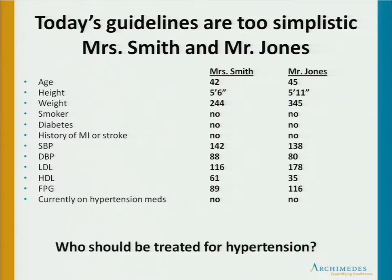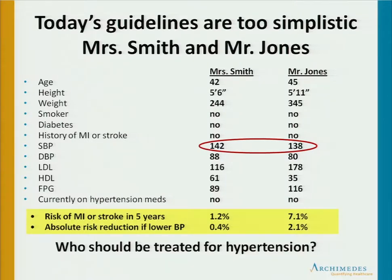The question we're going to ask is who should be treated for hypertension. The hypertension guideline says treat if your blood pressure is over 140, don't treat if you're under 140. Mrs. Smith's blood pressure is a little bit over 140; Mr. Jones is a little bit under 140. But if you actually look at the risk of an MI or a stroke in the next five years, Mr. Jones has five times the risk as Mrs. Smith, and he would get five times the benefit from treatment of hypertension.